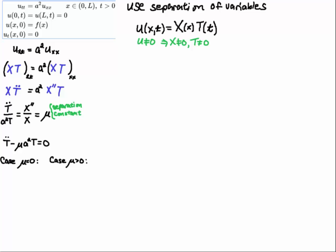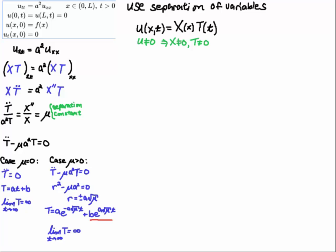I have to consider the cases where the separation constant is zero, greater than zero, and less than zero. If the separation constant mu is zero, then T double prime equals zero, giving T equal to at + b. Taking the limit as t goes to infinity, this clearly blows up, so this case — mu equals zero — can't be a valid solution.